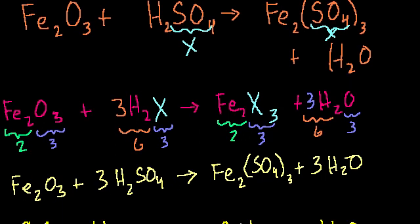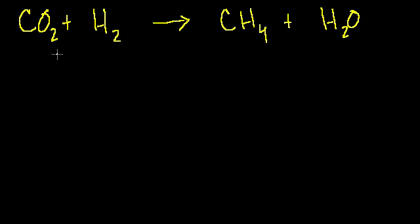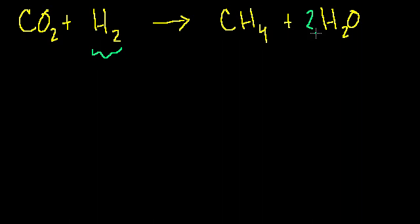One more example: carbon dioxide plus hydrogen gas yields methane plus water. The carbons are already balanced — one carbon on each side. For oxygen, I have two oxygens in CO2 and one in water, so I put a 2 in front of water. Finally for hydrogens: I have four hydrogens in methane plus four in two water molecules, so eight hydrogens on the right — I put a 4 in front of H2 on the left. The equation is balanced.